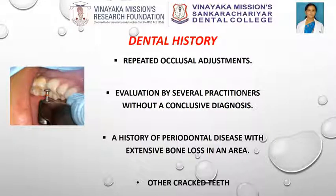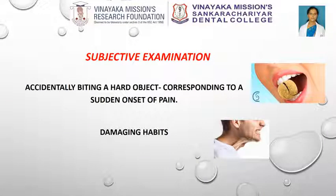Dental history: check for history of repeated occlusal adjustments with only temporary relief of symptoms, or evaluation by several practitioners without a conclusive diagnosis. Also check for history of periodontal disease with extensive bone loss in the area. Additionally, check for history of other cracked teeth, because many anatomical and behavioral factors that predispose teeth to cracks often affect more than one tooth. Subjective examination: ask if the patient remembers accidentally biting a hard object, which may correspond to a sudden onset of pain. Also ask about damaging habits such as clenching or grinding the teeth, or chewing on ice, pens, hard candy, or other hard objects.